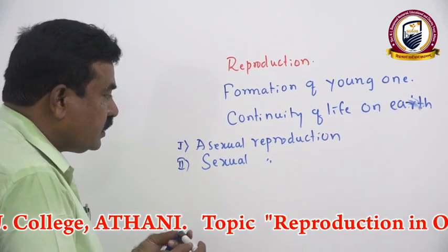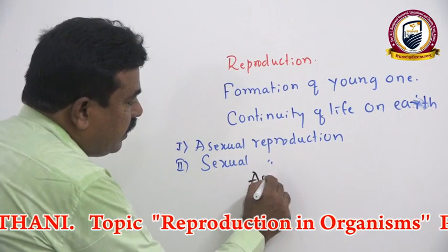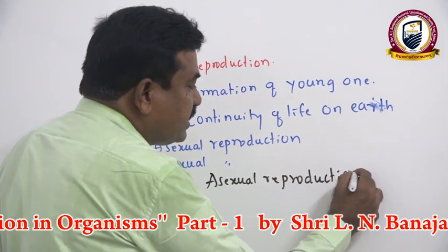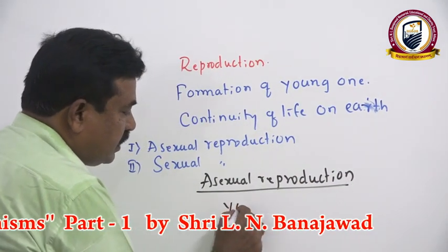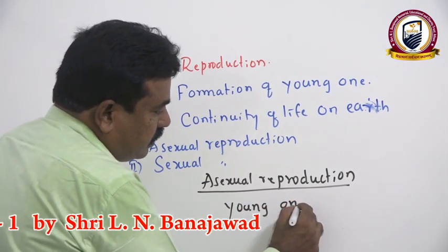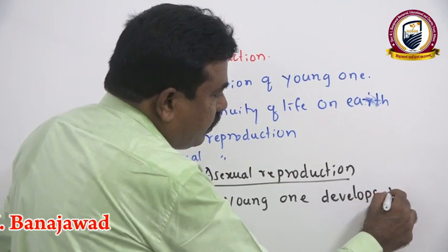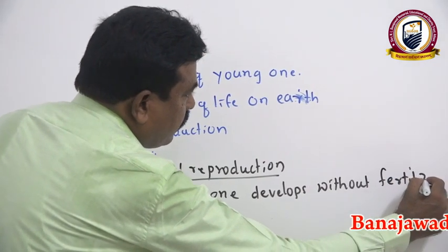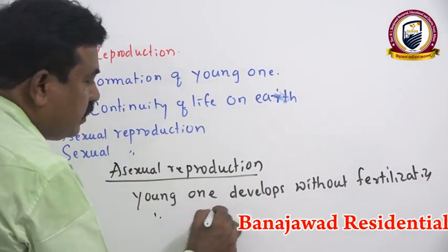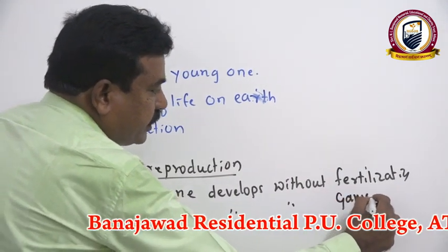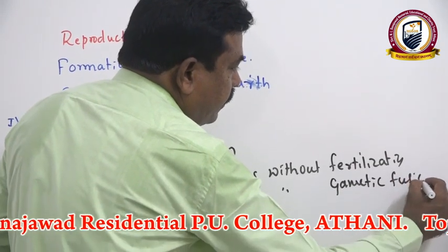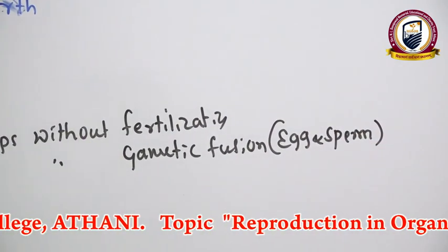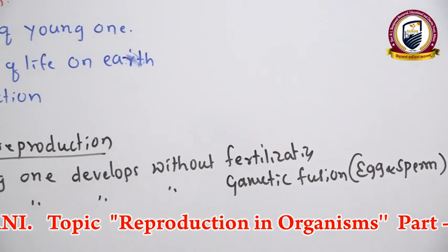Asexual reproduction is the production of young ones without gametic fusion, without sex cell fusion — that is, young ones develop without fertilization. The egg and sperm may not be fused during young one development. That is what we call asexual reproduction.